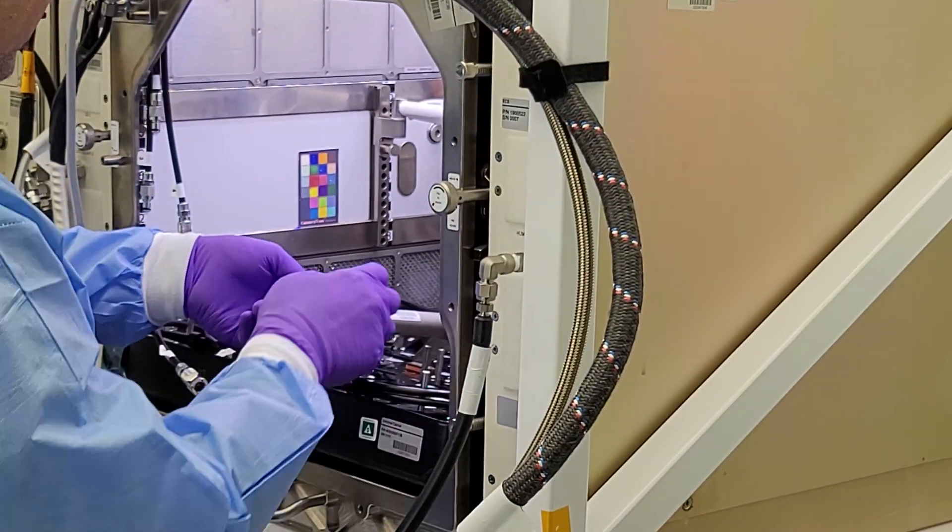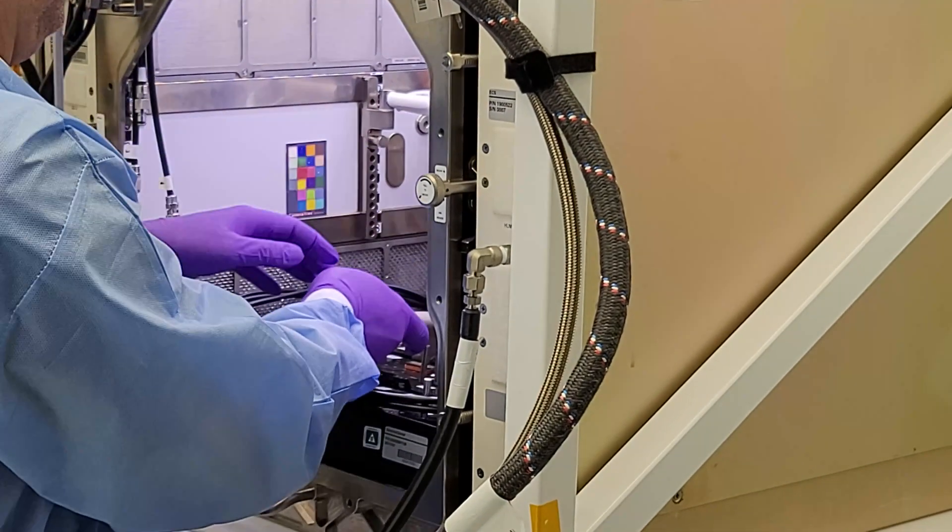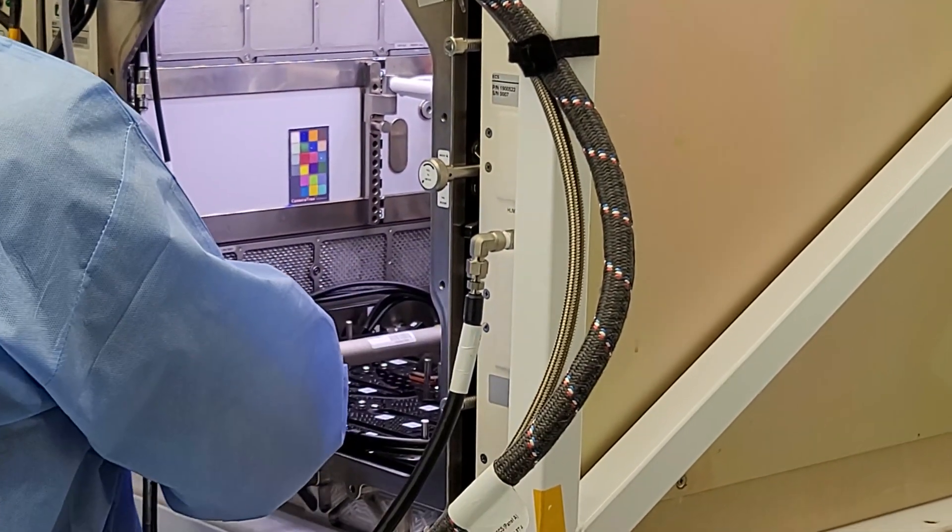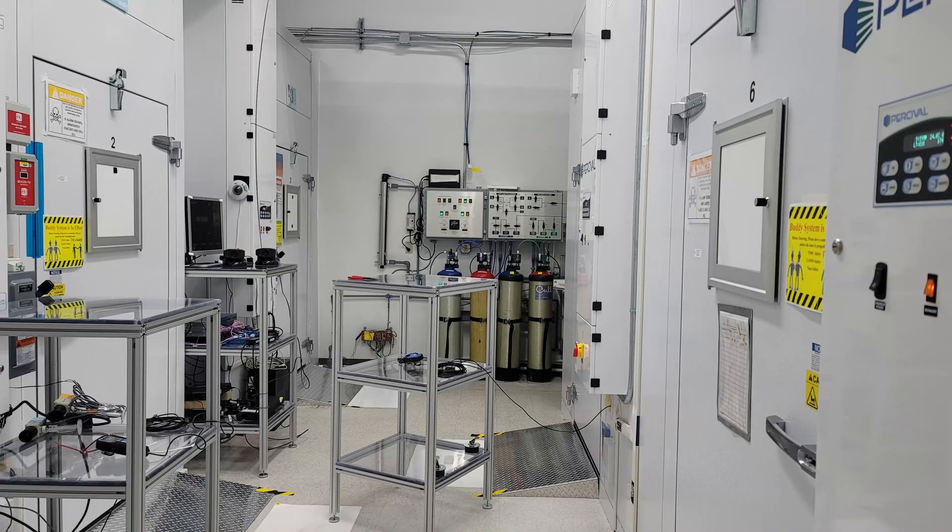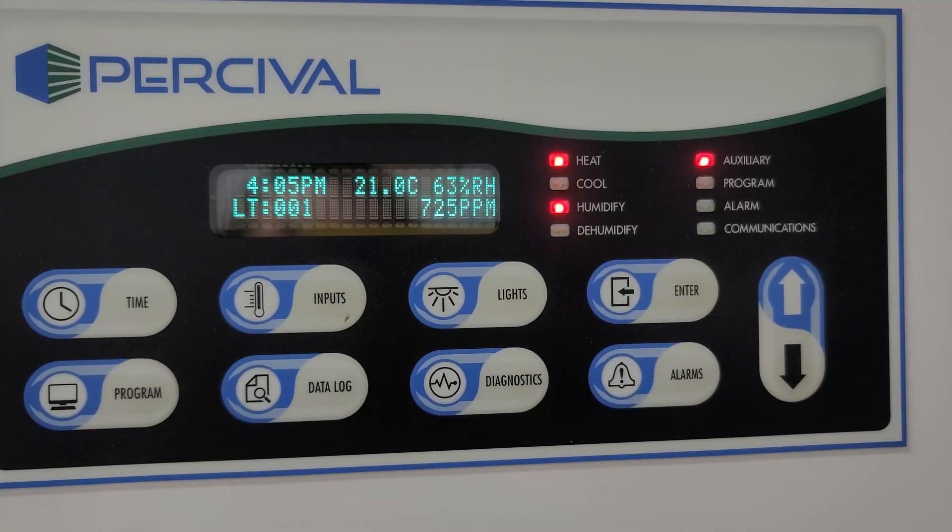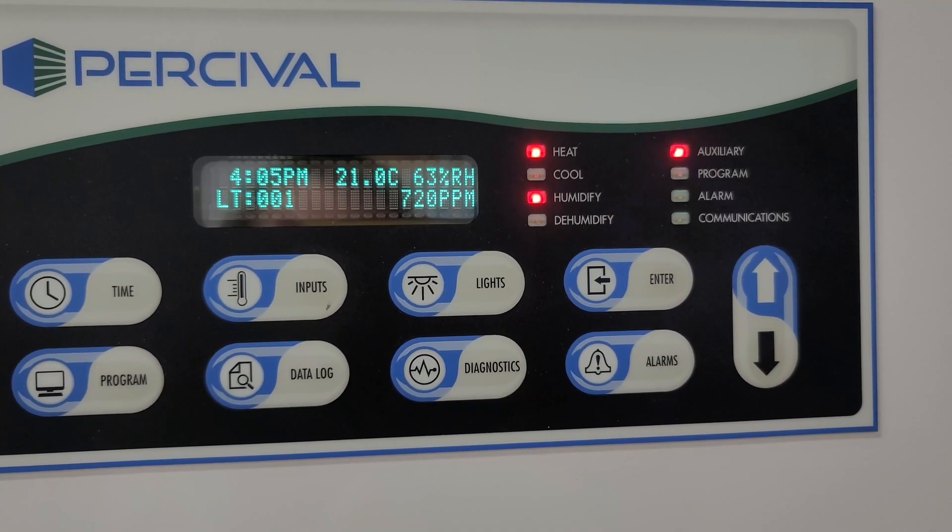We're also always trying to make it as real as possible so some experiments depending on how sensitive they are actually go in an environmental chamber where we replicate not only the temperature but the carbon dioxide content of the actual ISS station.